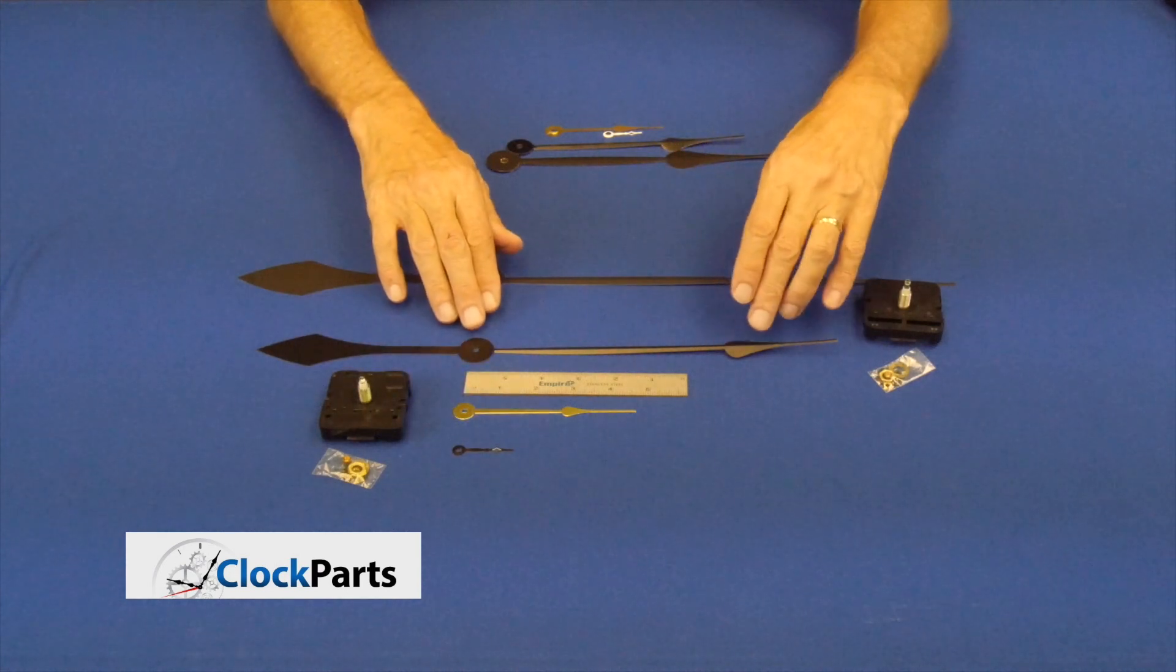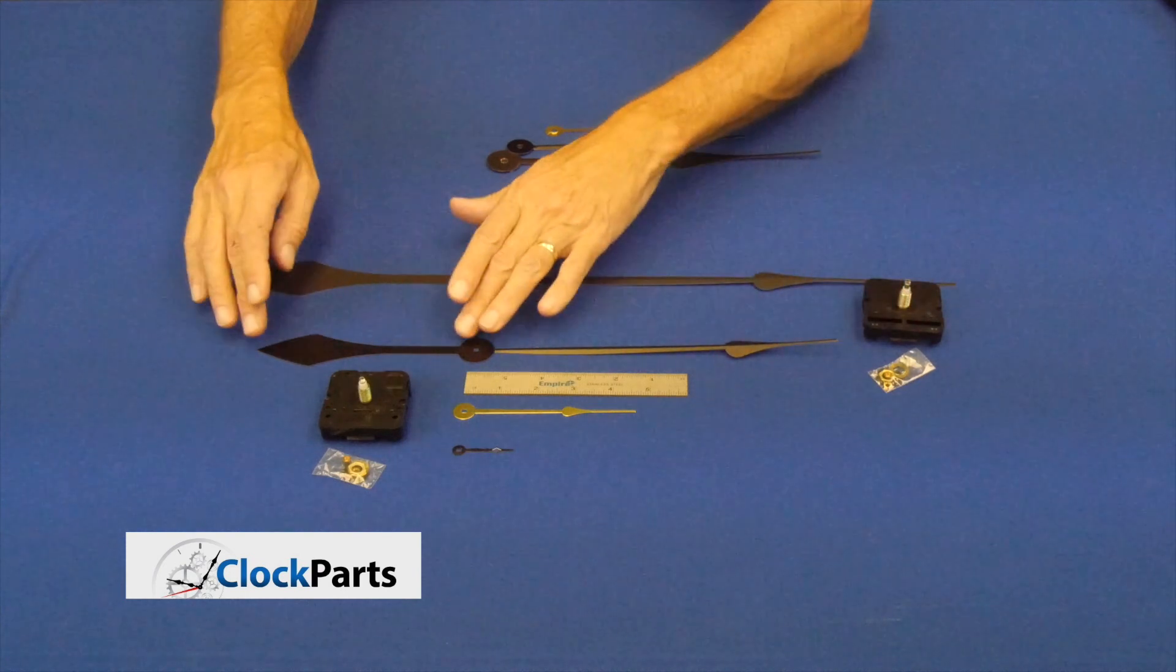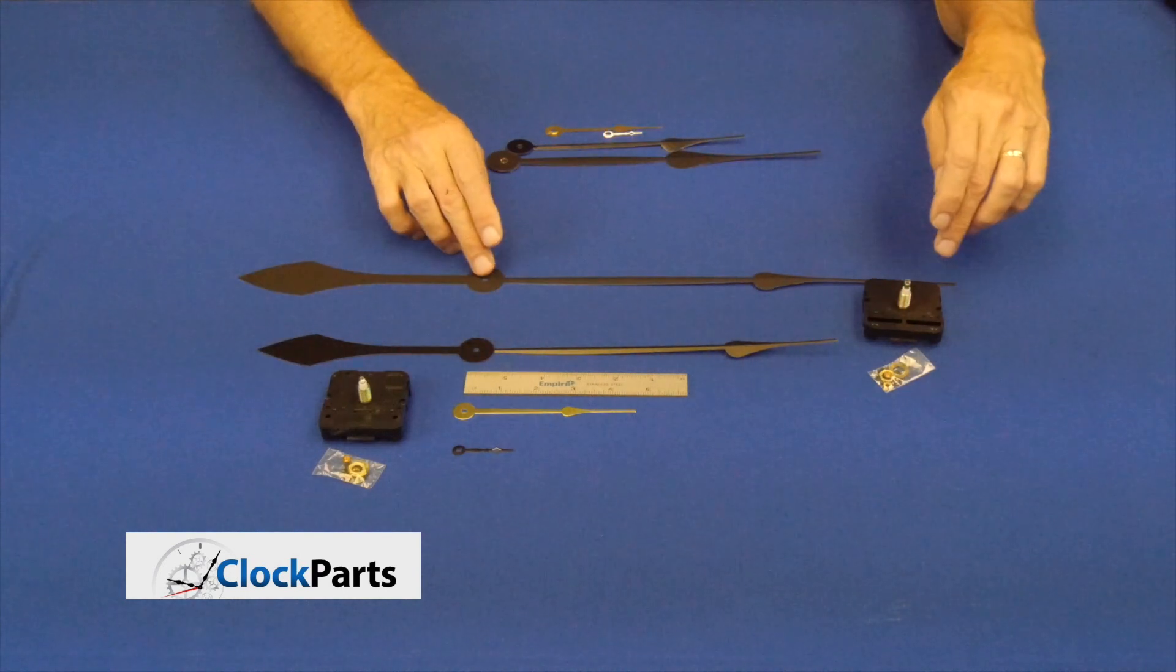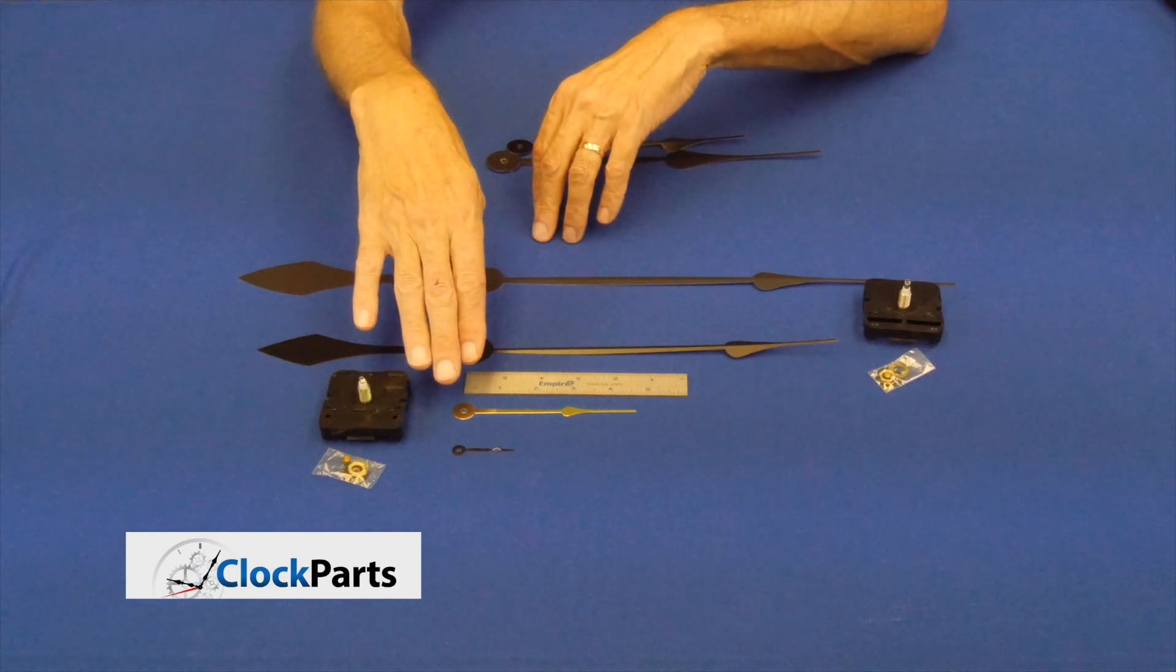When you get into high torque clock hands, it's still from the mounting hole to the tip. You don't include the tail, from the mounting hole to the tip.